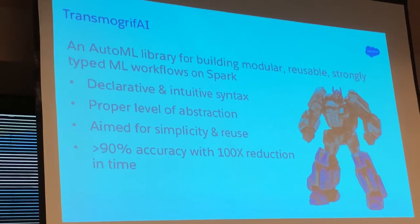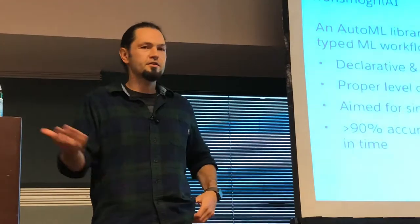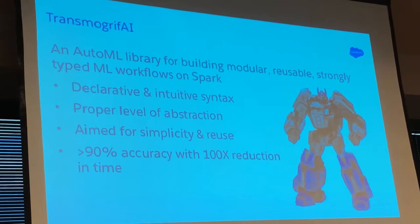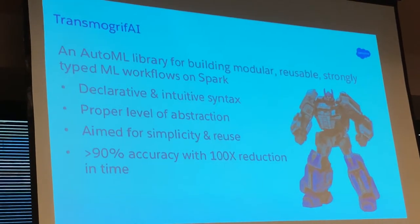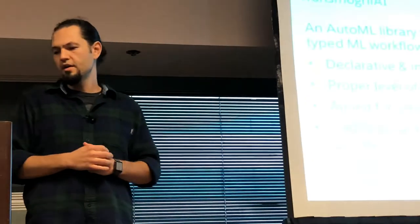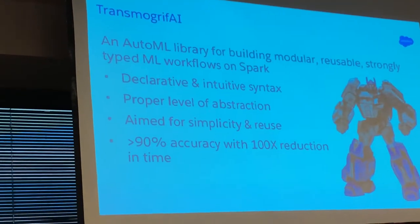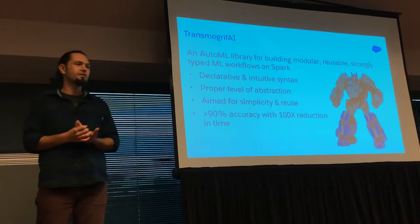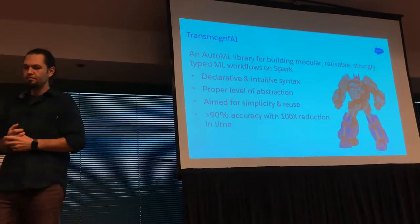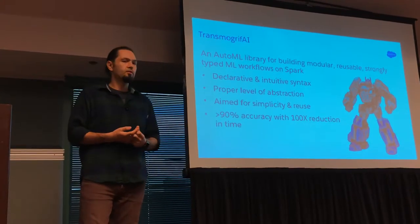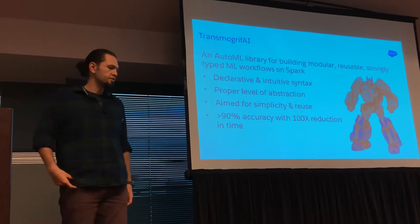As of two weeks ago, this was a closed-source project — this is actually the first time I'm giving a talk about Transmogrify as open source. This is an automated library we've built over the last couple of years. It tries to build your machine learning applications fast, save your precious time, give you a good syntax and environment to evolve your prototypes. But most importantly, it also handles productionizing — there's no limit. It's not like you build a notebook and then need to spend extra cycles for some team to productionize it. This is the environment for prototyping and productionizing.